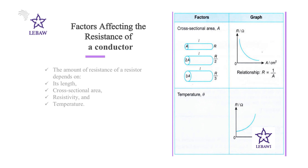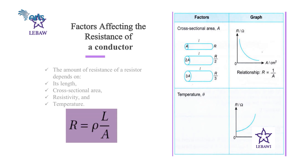The final factor that affects the resistance of a conductor is temperature. Resistance increases with temperature — the greater the temperature, the greater the resistance. You can put this all into one equation: R is equal to resistivity times length divided by area.